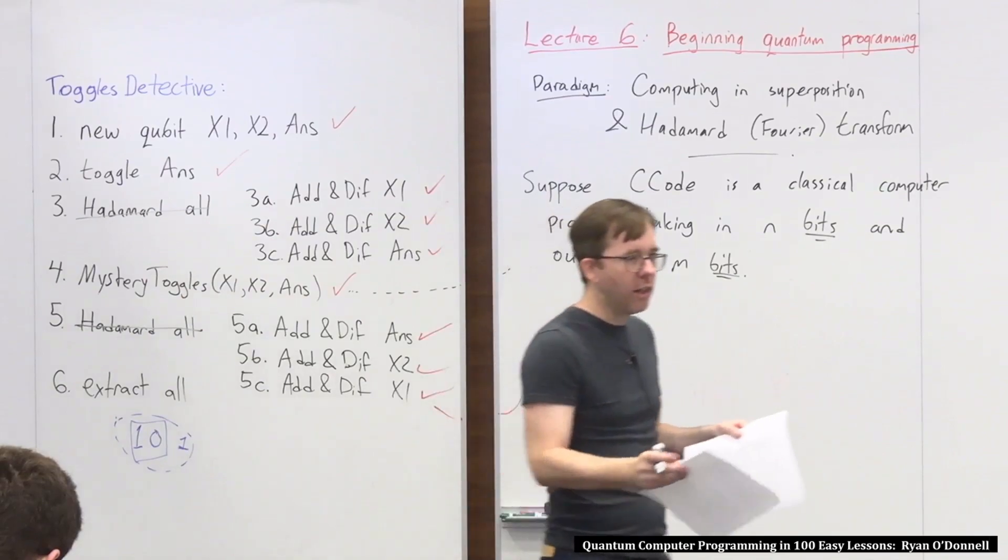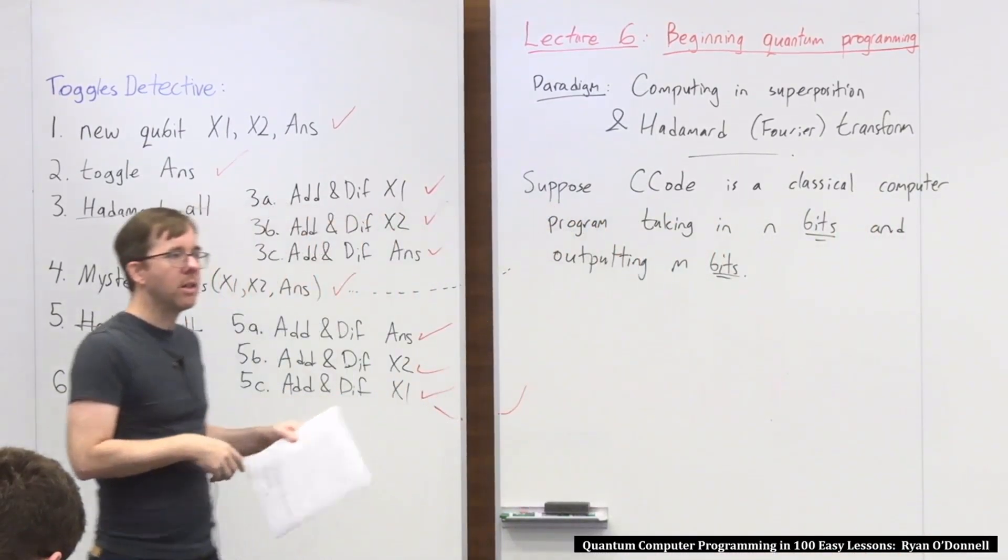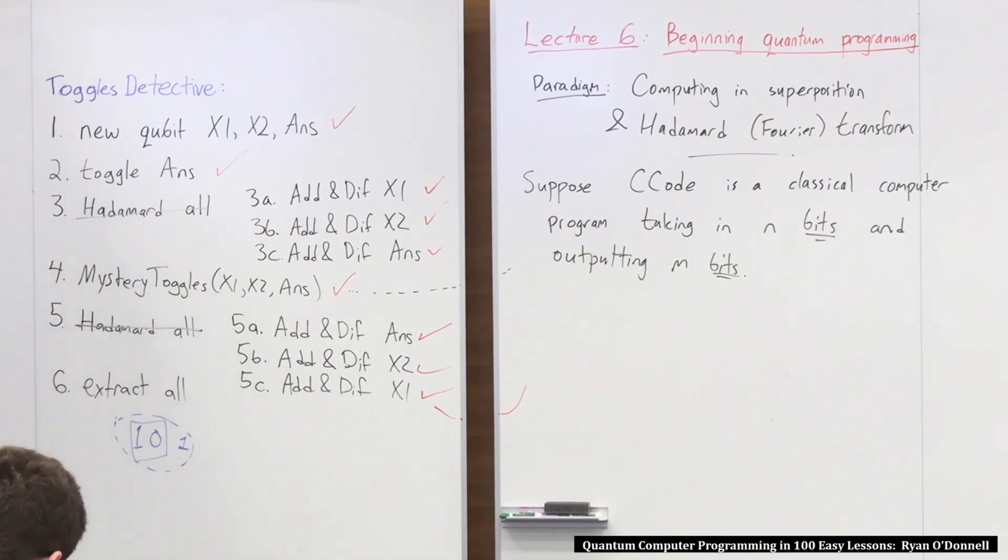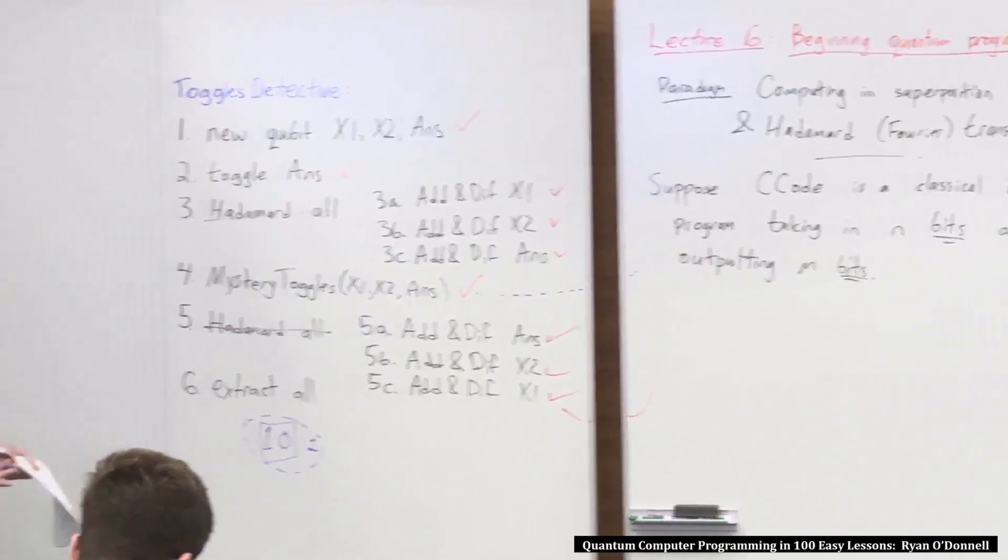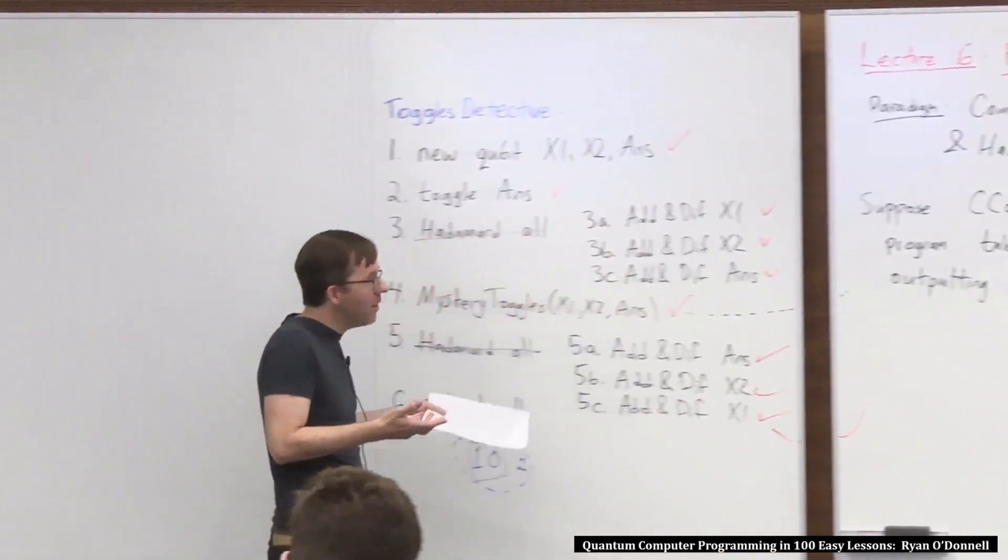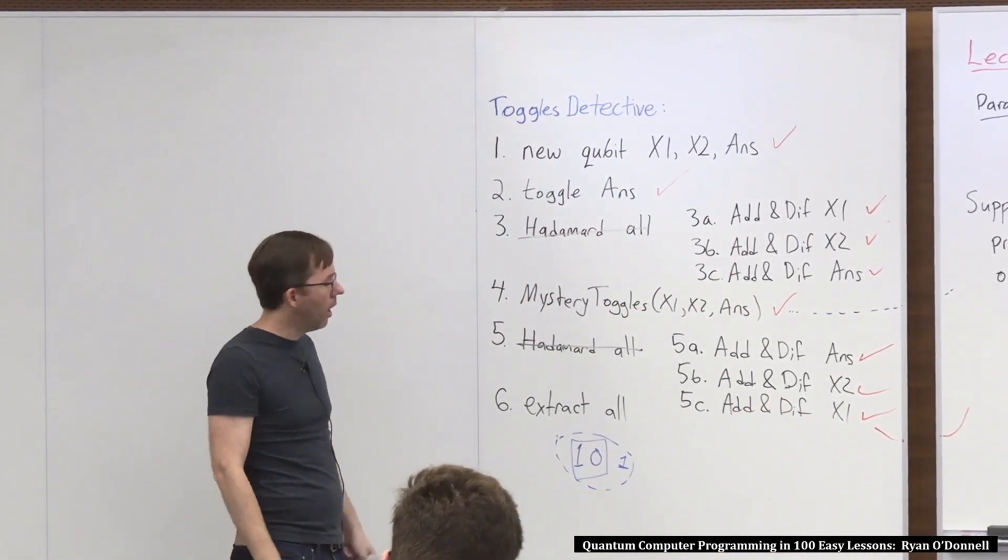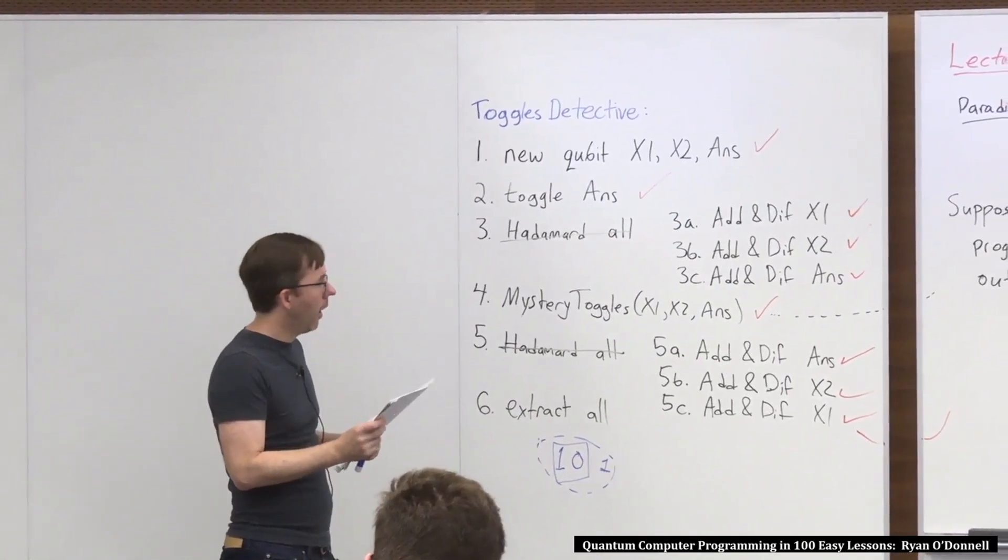C code is a classical computer program taking in n bits and outputting m bits. It's a code, some function that has an input and has some return values, and we code everything in bits in computer science. And somehow you're supposed to imagine that there's some mystery aspect to this code that you're hoping to reveal. Now, you might say, like, how could there be a mystery? Like, I wrote the code, there's no mystery to it. But you can write some code and not really be sure what it does, right?